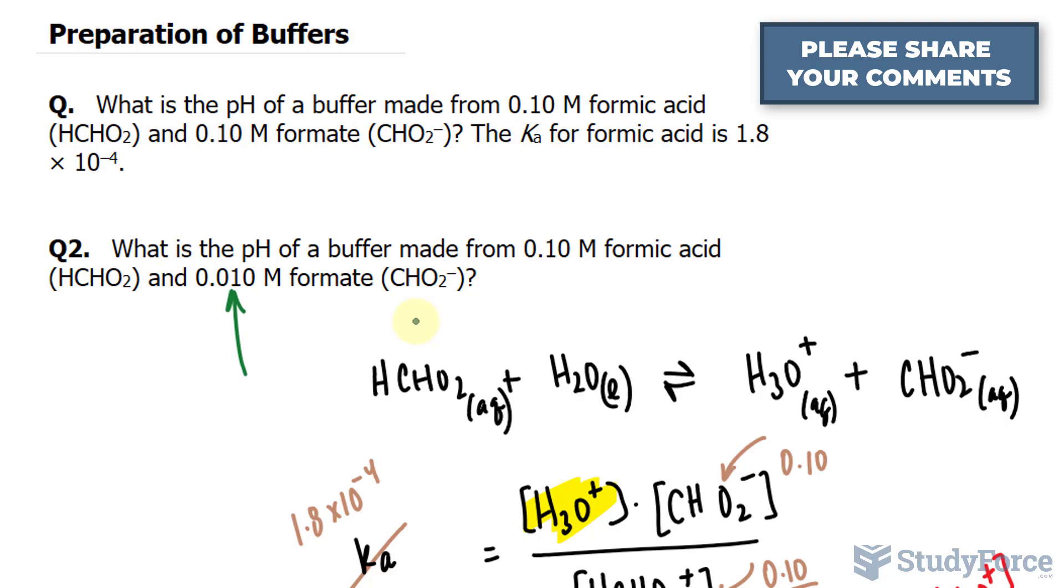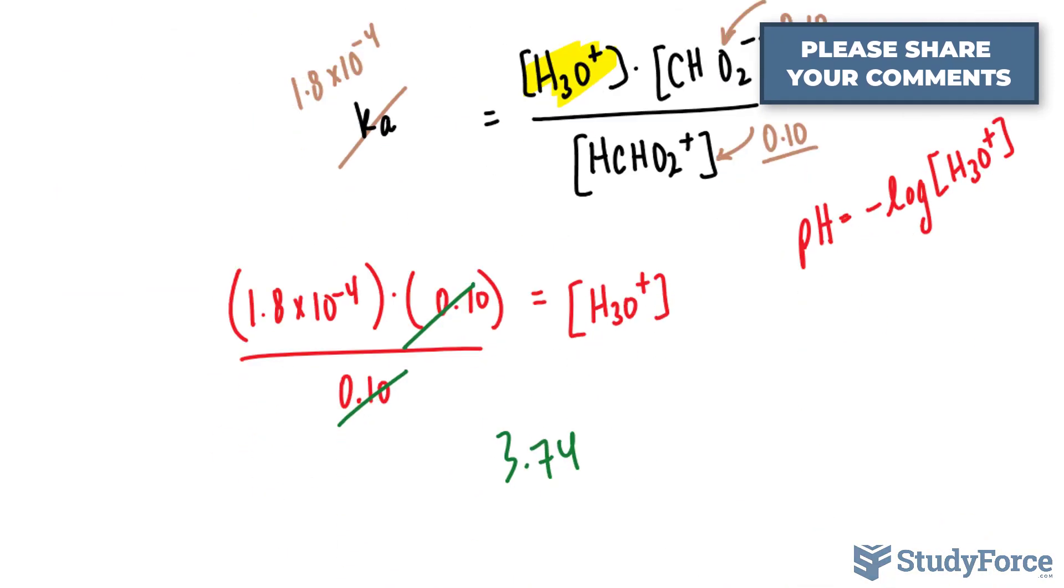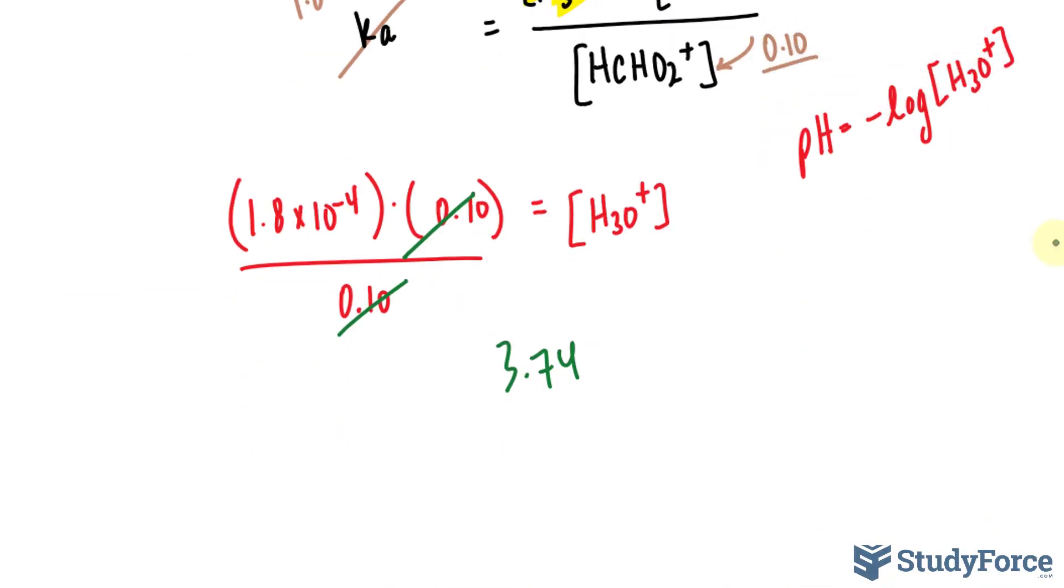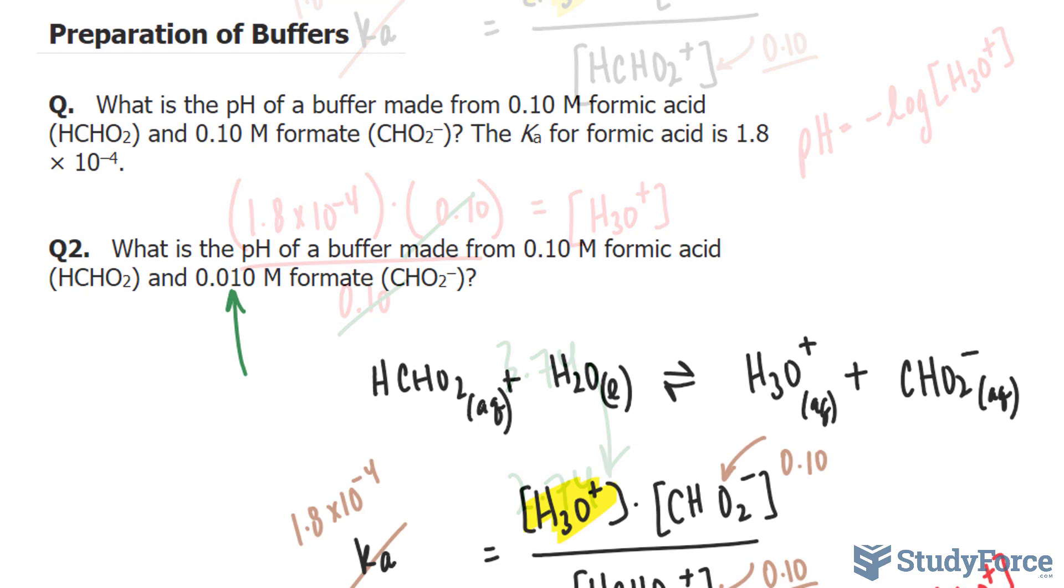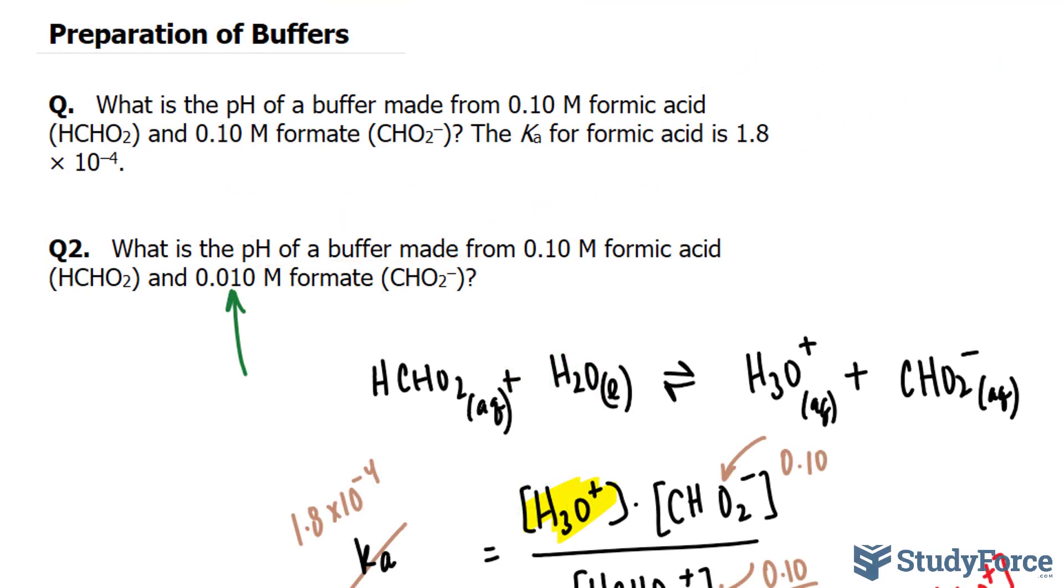Now how does that translate without having to do all these calculations? It turns out that if you do all these calculations, you'll find out that the pH is 2.74. It goes down by a magnitude of 10, and that's shown in these numbers. So that's the answer to question number two, and that is how to calculate for the preparation of buffers.